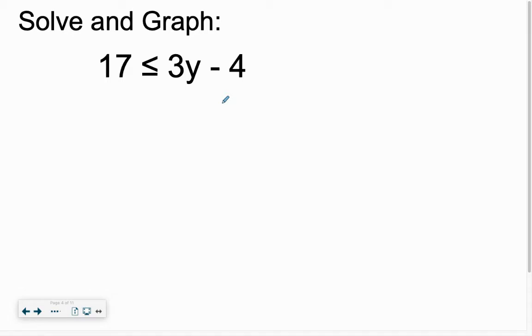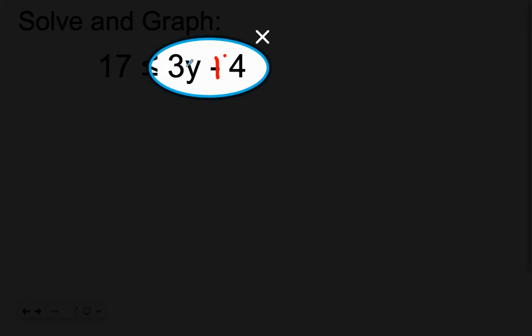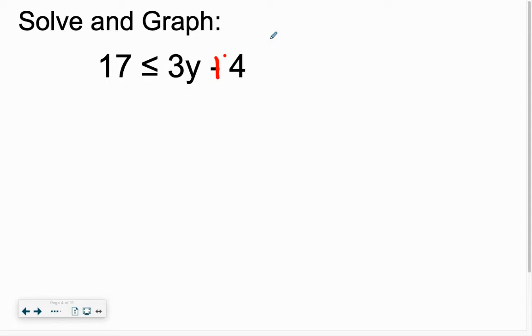Anytime it says solve, we follow the same steps. Find the variable. It's not on our beloved left side, don't panic. We're trying to get 3Y all by itself. Cover it up and focus on the other thing. We need to get rid of adding negative 4. Step 1 is to add. Add plus 4 to both sides.